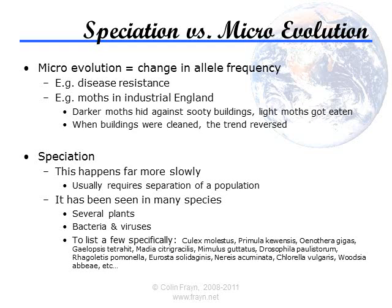Speciation can also be seen in plants very easily, and has happened many times over the last century in a highly documented manner — for example, in wheat. One good example is the oft-discussed increase in the ploidy of plants, that is, the number of copies of each chromosome within the plant's DNA. One specific example is salsify, a plant observed to speciate in North America during the 20th century — in fact, at roughly the same time and place that William Jennings Bryan was prosecuting a science teacher for claiming that evolution might be true.